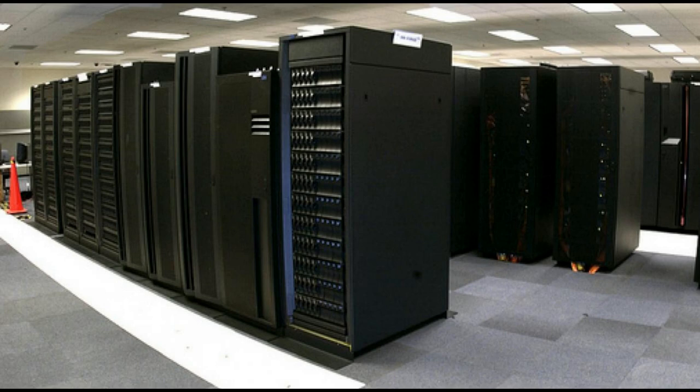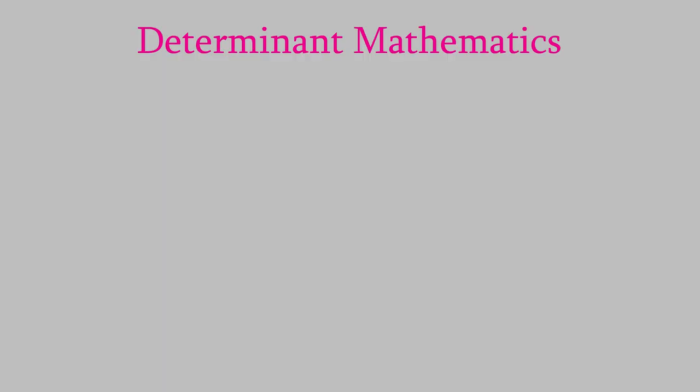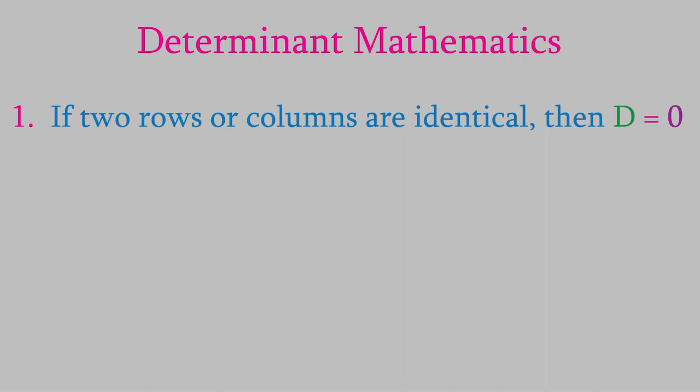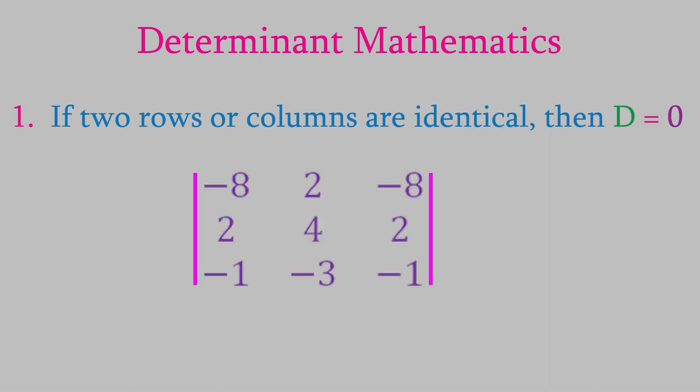Before we use them to solve equations, there are a few things to know about the mathematics of determinants. There are six basic rules. First, if any two rows or columns of the determinant are identical, then the determinant is equal to 0. For example, in this determinant the first and third columns are the same, so this determinant is equal to 0.